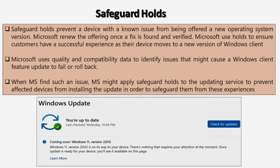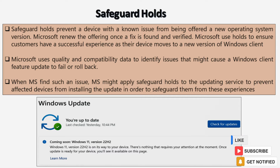Now let's discuss what is safeguard hold. A safeguard hold prevents a device with a known issue from being offered a new operating system version. Microsoft renews this offering once a fix is found and verified. Microsoft uses holds to ensure customers have a successful experience as their devices move to a new version of Windows client. Microsoft uses quality and compatibility data to identify issues that might cause a Windows client feature upgrade to fail or rollback. When Microsoft finds such an issue, it may apply a safeguard hold to the updating service to prevent affected devices from installing the update in order to safeguard them from those experiences.